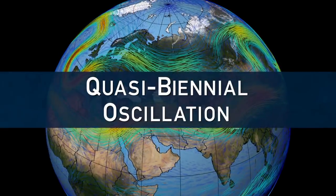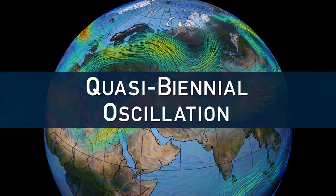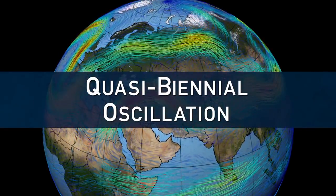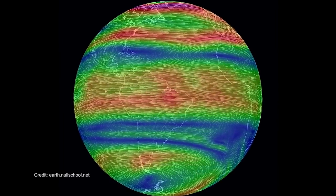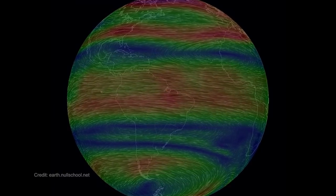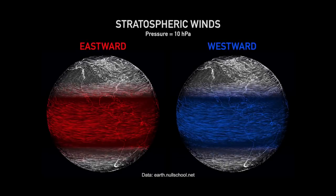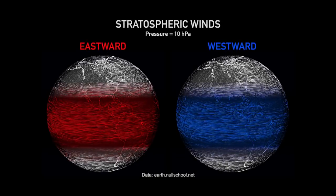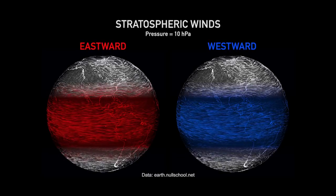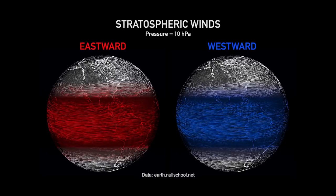The quasi-biennial oscillation, or the QBO, on Earth is an equatorial phenomenon in the stratosphere where the winds are changing direction approximately every two years. Depending on which phase the QBO is in — eastward or westward — the temperature signal corresponds to that, so it's warmer in the eastward phase and cooler in the westward phase.